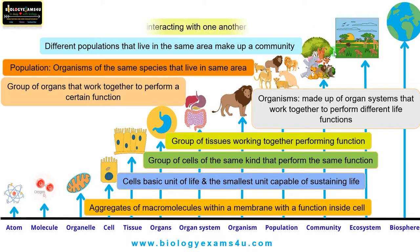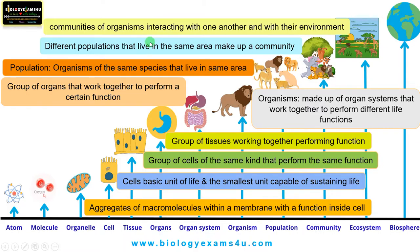The next level is the ecosystem, where communities of organisms interact with one another and also with their environment. This is the grassland ecosystem where lion, tiger, hyena, buffalo, and all the plants are interacting with each other and also interacting with the environment.